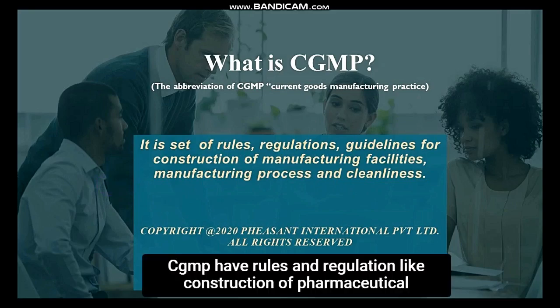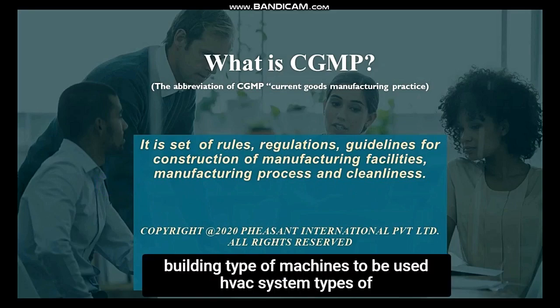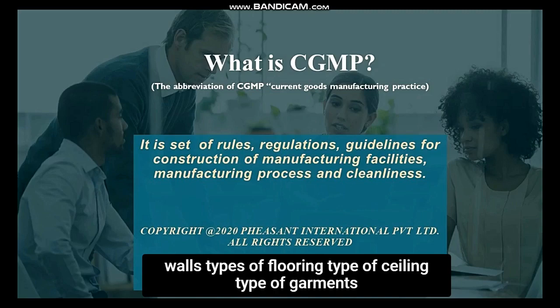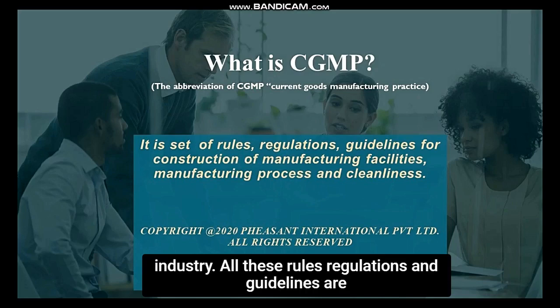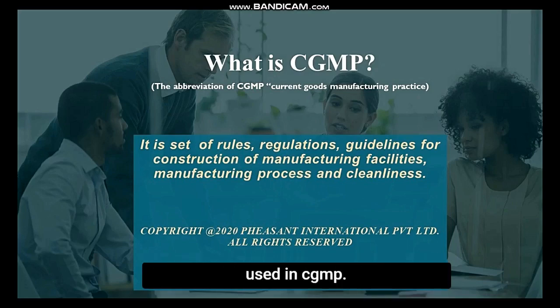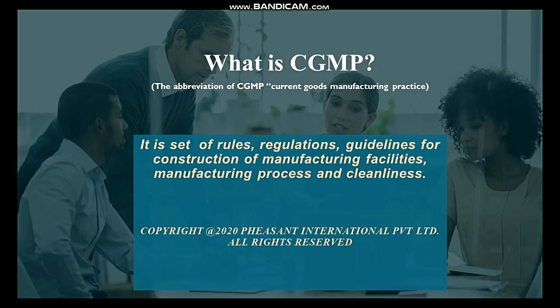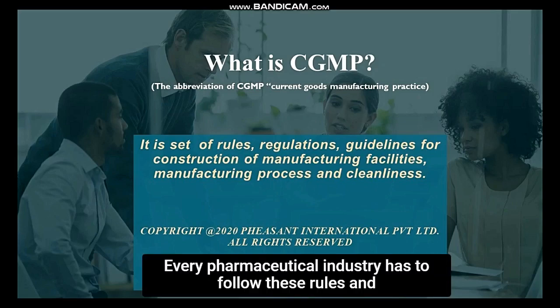CGMP has rules and regulations like construction of pharmaceutical buildings, type of machines to be used, HVAC system, types of walls, types of flooring, type of ceiling, type of garments used in the production area, and dust collection systems in the pharmaceutical industry. All these rules, regulations and guidelines are used in CGMP. Every pharmaceutical industry has to follow these rules and regulations.